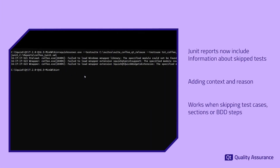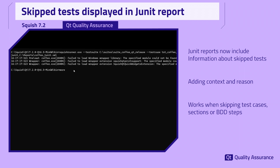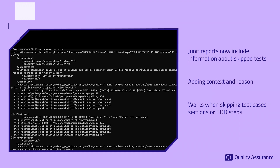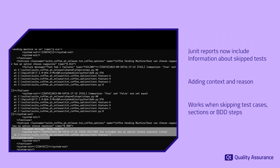As professionals who understand the value of accurate and detailed reporting, we have made enhancements to the JUnit report, a popular choice for integrating Squish with CI, CD, or test management tools. The updated report now includes valuable information about skipped tests, providing the context and reasons for skipping test cases, sections, or BDD steps.